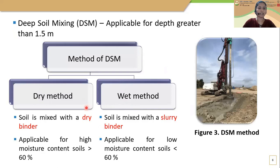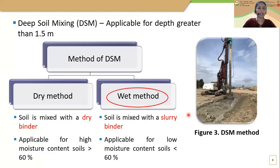In the dry method, soil is mixed with a dry binder and it is applicable for high moisture content soil. In the wet method, soil is mixed with a slurry including binder, and it is applicable for soil having low moisture content. In our project, we used the wet method because of the low moisture content of the soil.